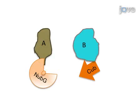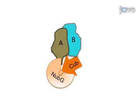If the NUBG and CUB are fused to protein A and protein B respectively, and A and B are capable of interaction, then the pseudo ubiquitin molecule can once again be formed.